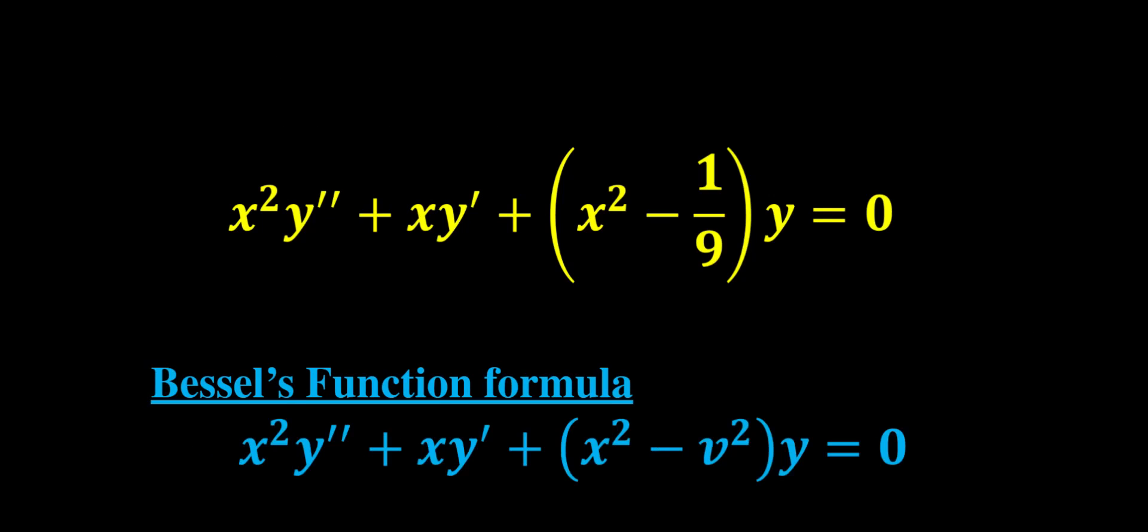Let's compare the equation that we are working with to the formula. We can see that our v squared is the same thing as one ninth, and from this we can calculate v being one third.